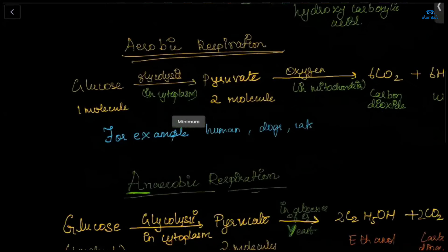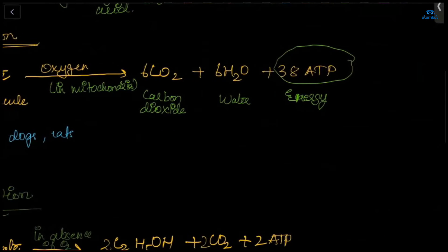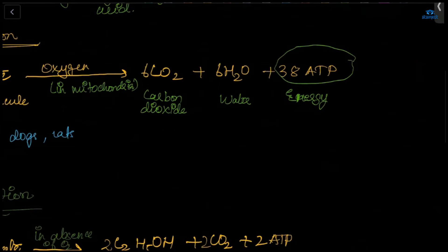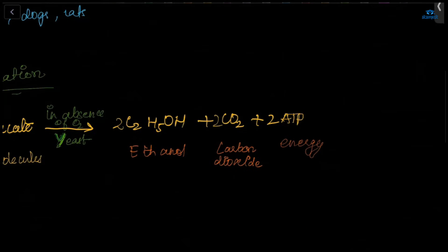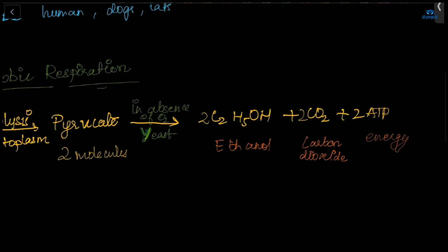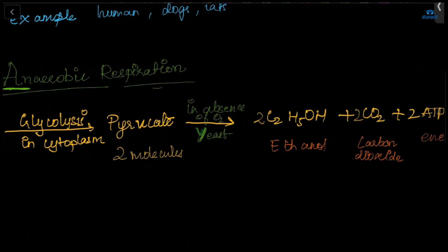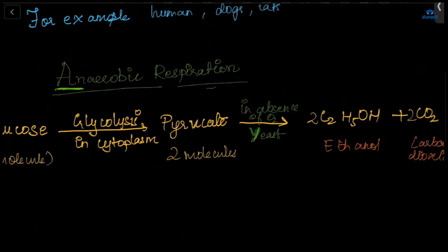In aerobic respiration we get 38 ATP molecules, but in anaerobic respiration we get only 2 ATPs — so much less energy is obtained from anaerobic respiration. Yeast is a microorganism; for example, in spoiled bread, yeast will be growing.